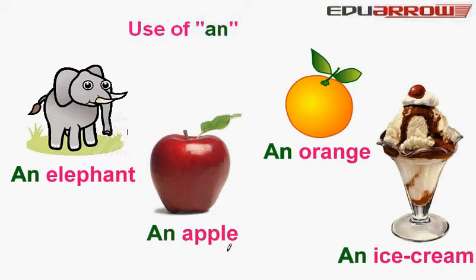An apple. The beginning letter of apple, A, is a vowel. So we can add 'an' before apple.